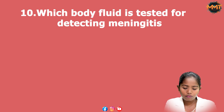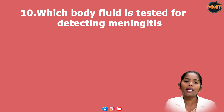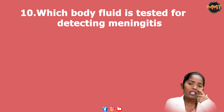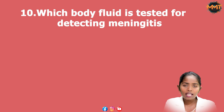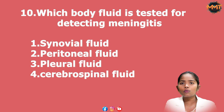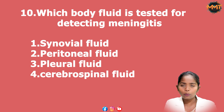Question 9: What type of body fluid is tested for detecting meningitis? Meningitis is related to the brain and is neurological. Options: 1. Synovial fluid, 2. Peritoneal fluid, 3. Pleural fluid, 4. Cerebrospinal fluid. The answer is cerebrospinal fluid.